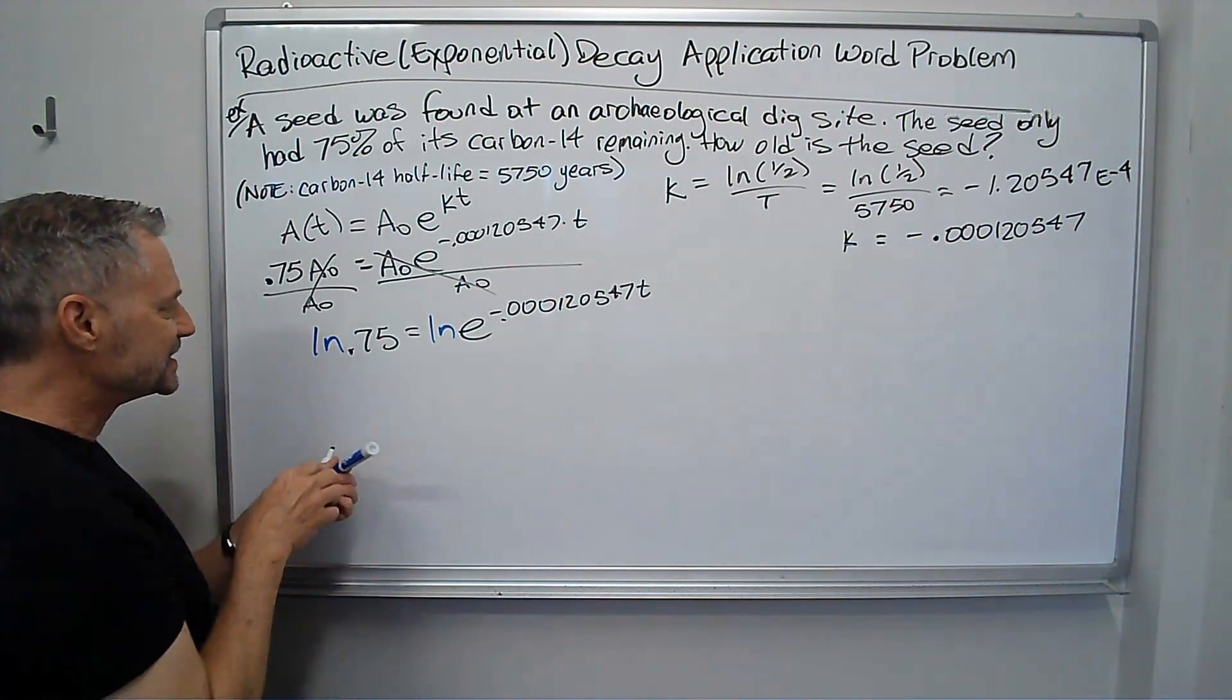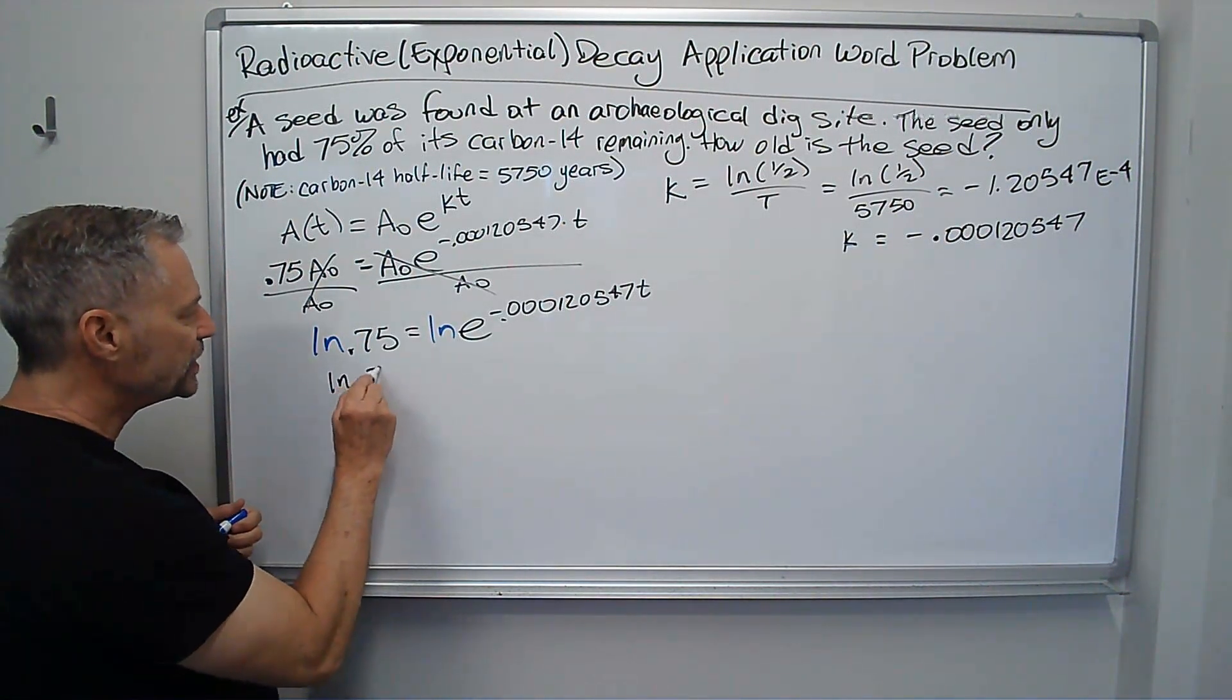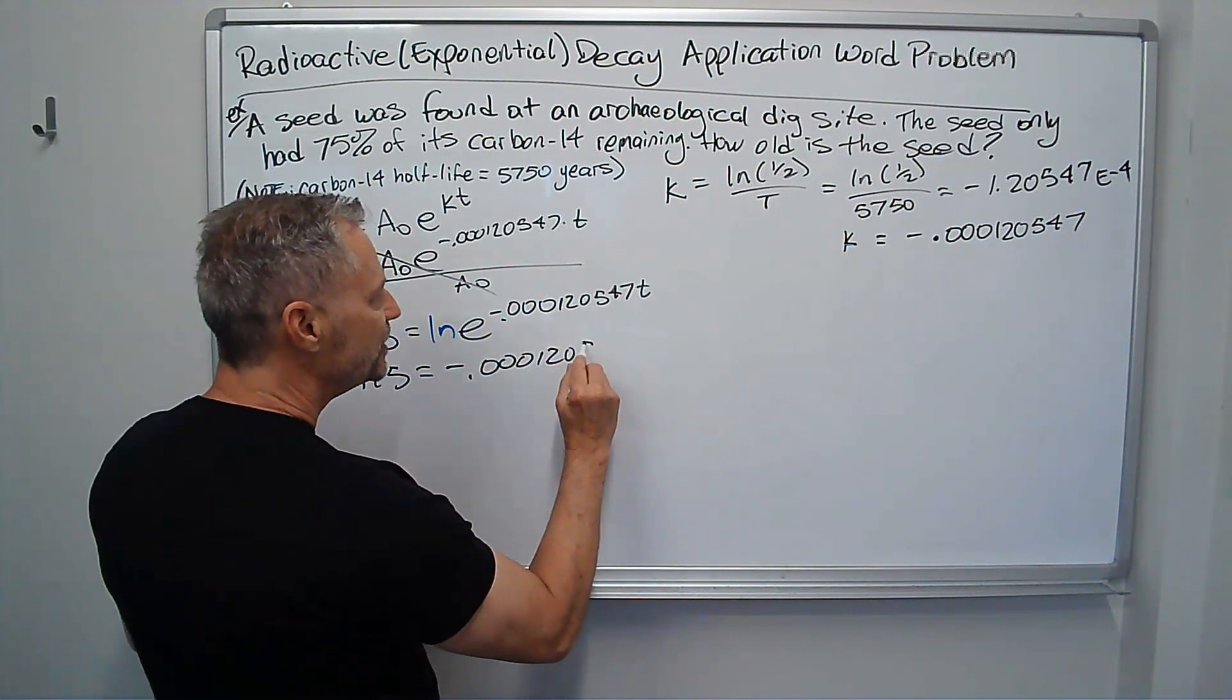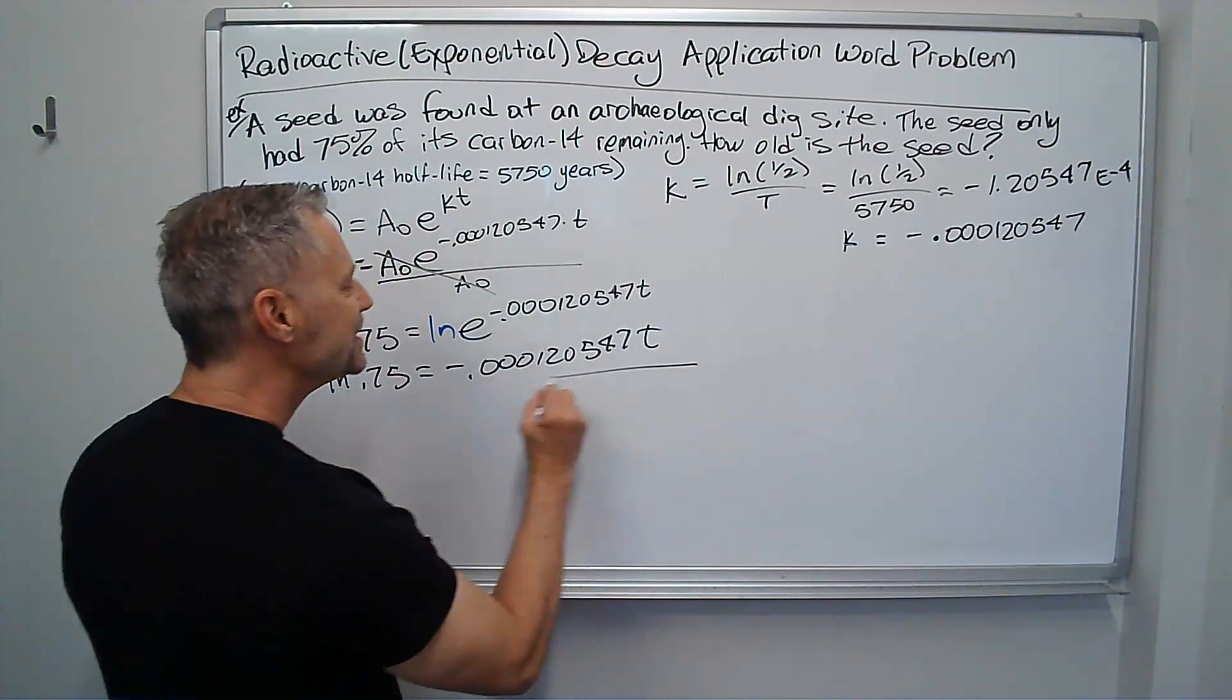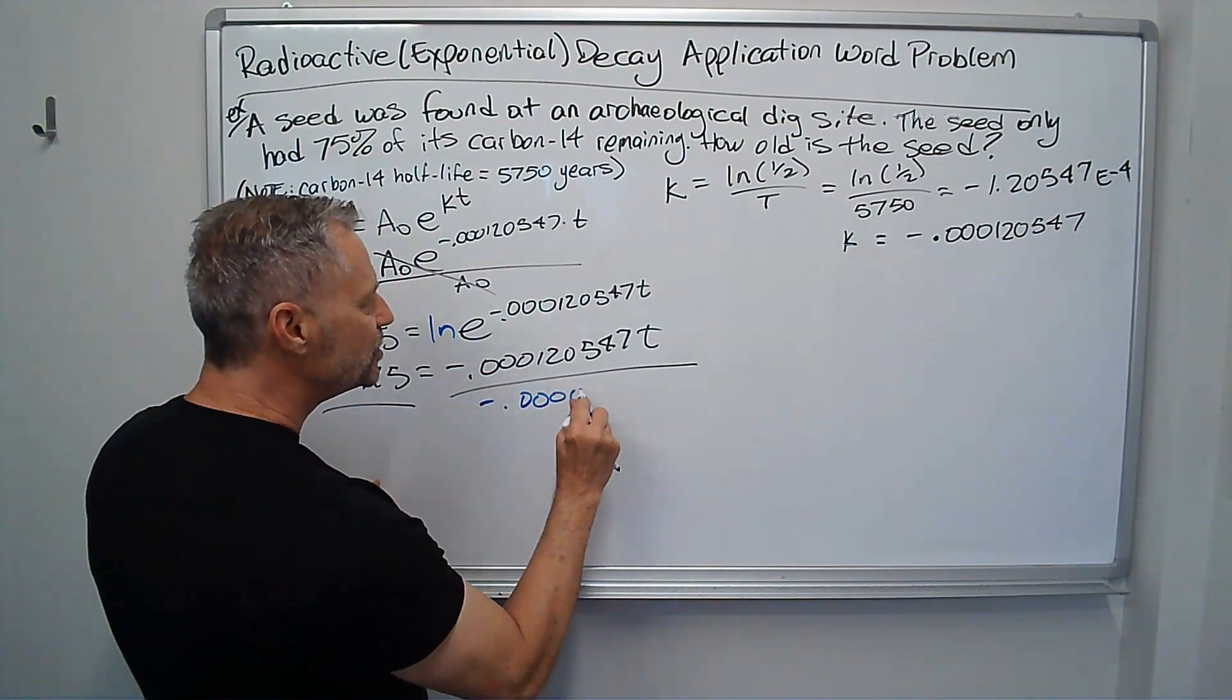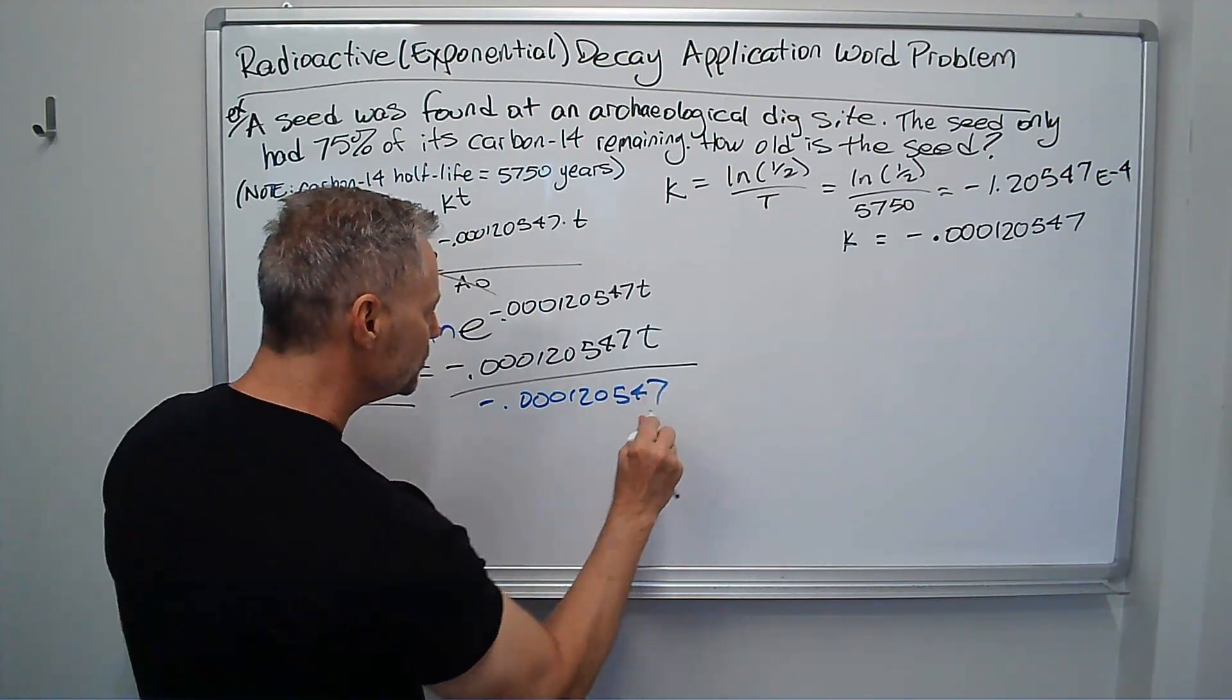So I get ln of 0.75 equals negative 0.00012047t. And I divide by all that stuff. Negative 0.00012047, both sides.